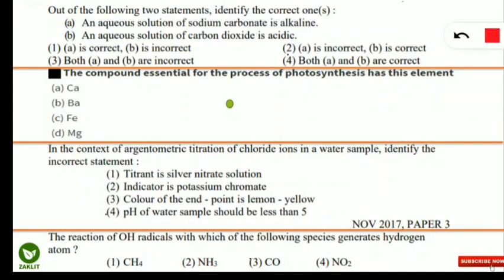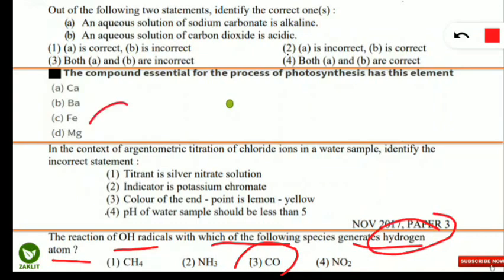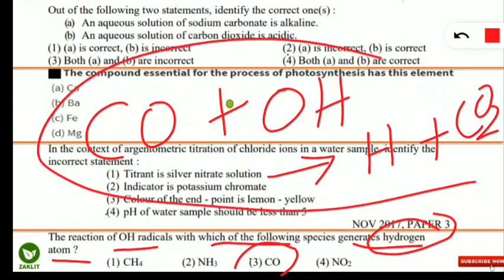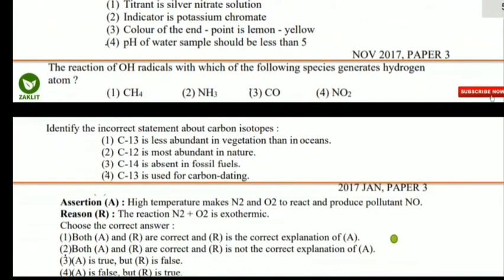The next question: the reaction of OH radical with which species generates a hydrogen atom? The correct option is carbon monoxide. The reaction is: CO + OH → H (atomic) + CO₂. So when CO reacts with OH radical, it produces an atomic hydrogen and carbon dioxide.